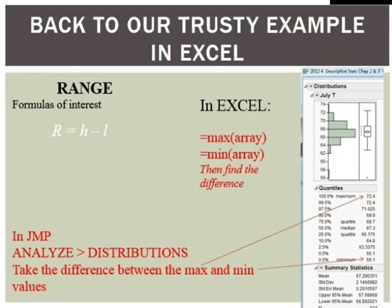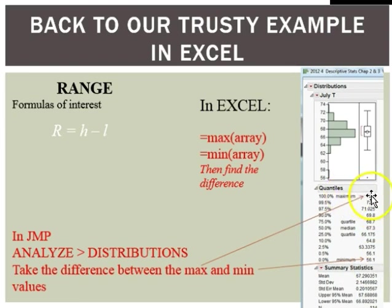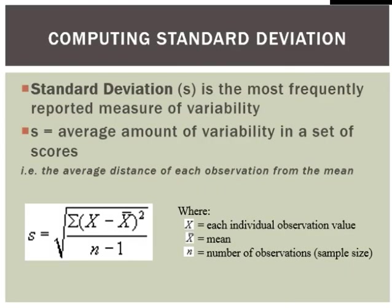There is no standard function to pull out the range in Excel, but you can use the MAX function and the MIN function and then just do a simple difference to find your range. If you're in JMP, you can simply look at the minimum value reported in your quantiles and the maximum value, take the difference of that, and you have your range.